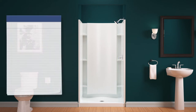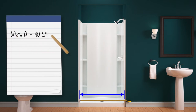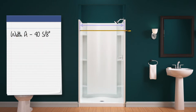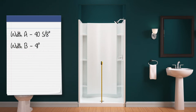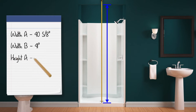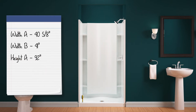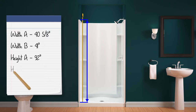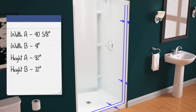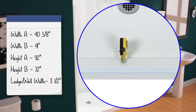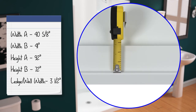Write down all measurements for future reference. Measure the width of your opening along the ledge, then measure the width of the opening about 5½ feet up from the ledge. Measure the height of the opening from the ledge to the ceiling, and measure the height of the showering space. Measure the width of the flat surface on the ledge and walls. If there is a lip on the front of the ledge, measure from the back of the lip.